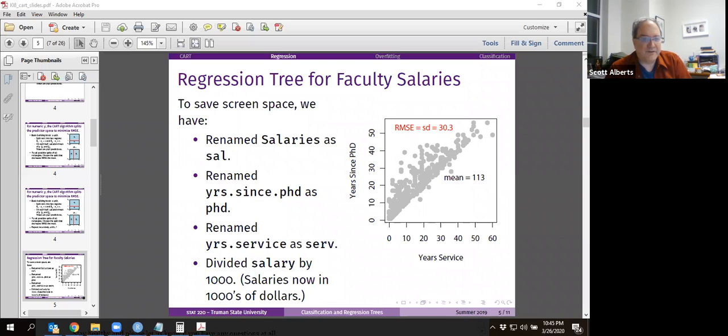We're going to use the salary data set that we looked at a little bit ago. This looked at salaries at a university, I think it was a business school, and they were part of a lawsuit and investigation about how men and women were paid differently. If you wanted to make a super simple model of the entire data set, we could just assume that everyone earns the mean. I'm only looking at two variables here: years since PhD and years of service. I simplified the variable names and divided salaries by 1,000.